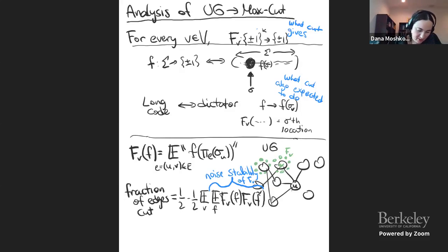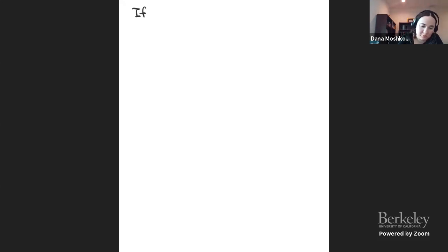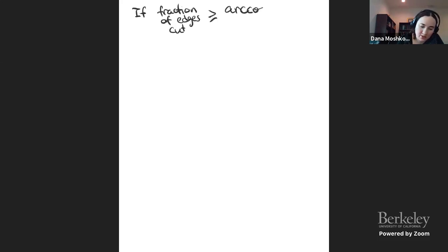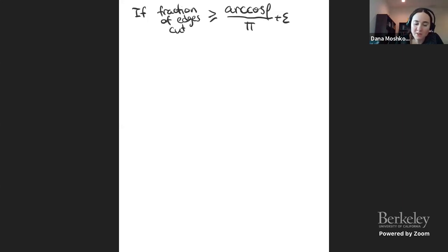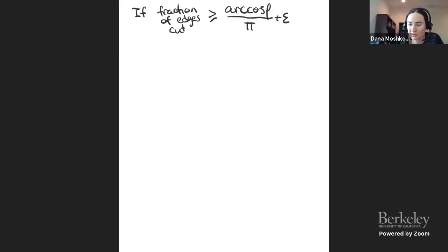Let me write down the analysis. If the fraction of edges cut is at least arccos(ρ)/π + ε — which comes from the Goemans-Williamson calculation — then by averaging, for at least an ε/2 fraction of the vertices V, we get that the noise stability of fv satisfies a certain bound. If many edges are cut, then for many vertices the fv's must be noise stable.